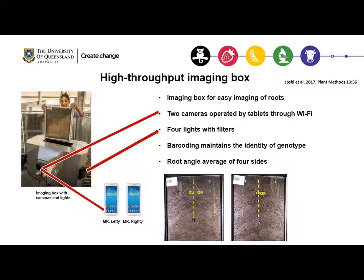We also have an imaging box to image all 500 lines in a day. This imaging box consists of two cameras on both sides operated from a distance through tablets — we named these tablets Mr. Lefty and Mr. Righty, very popular names in Australia. The box also has four lights with filters, and we have a barcoding system to maintain the identity of every line. Root angle as seen on the surface of the soil is then measured.